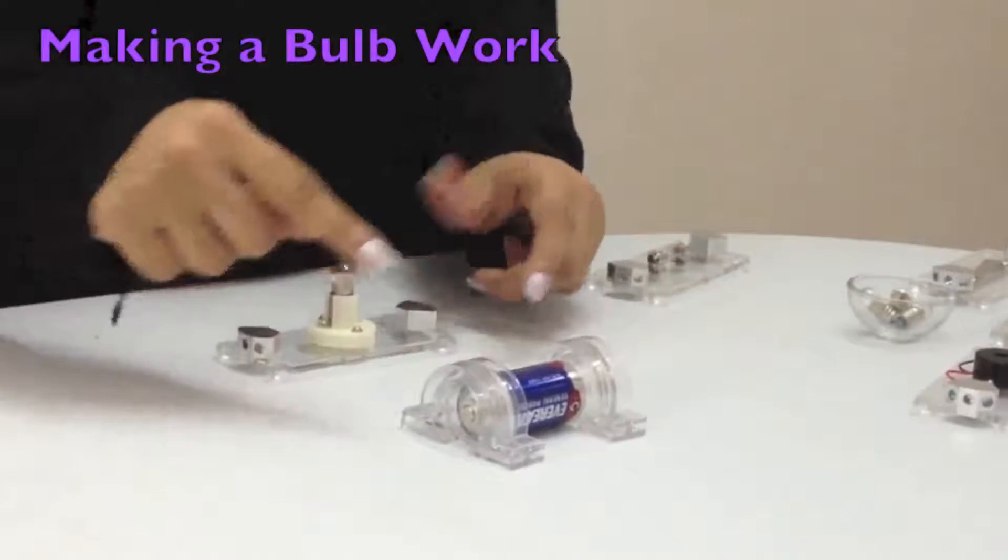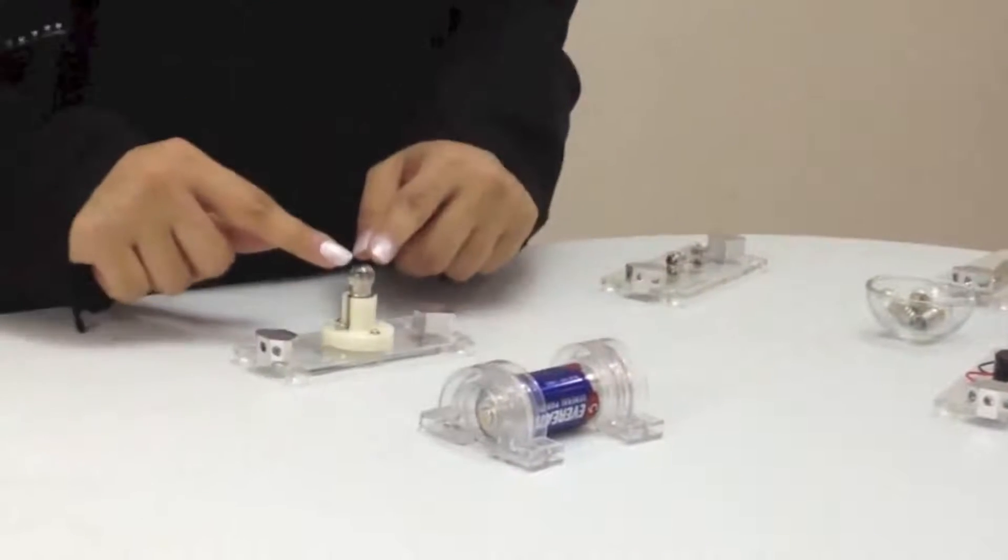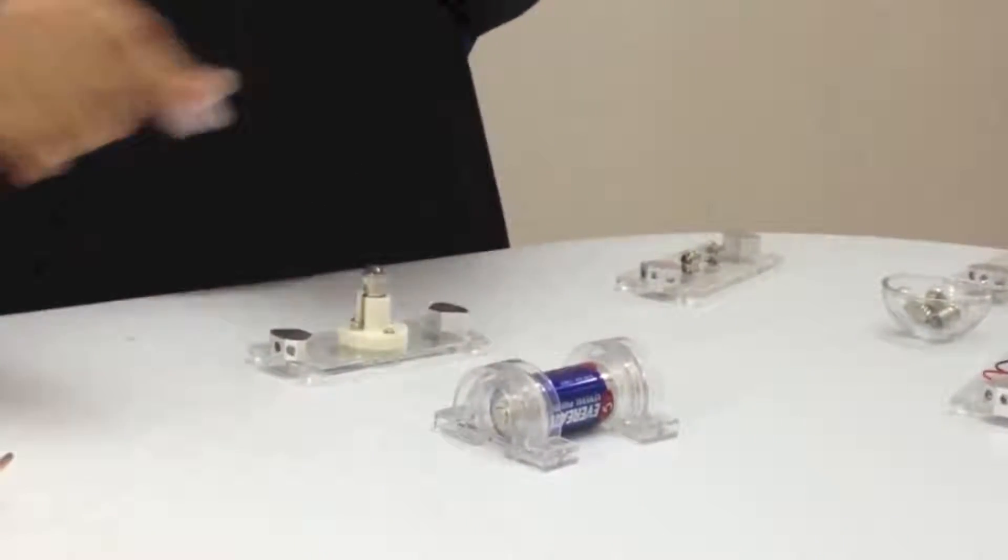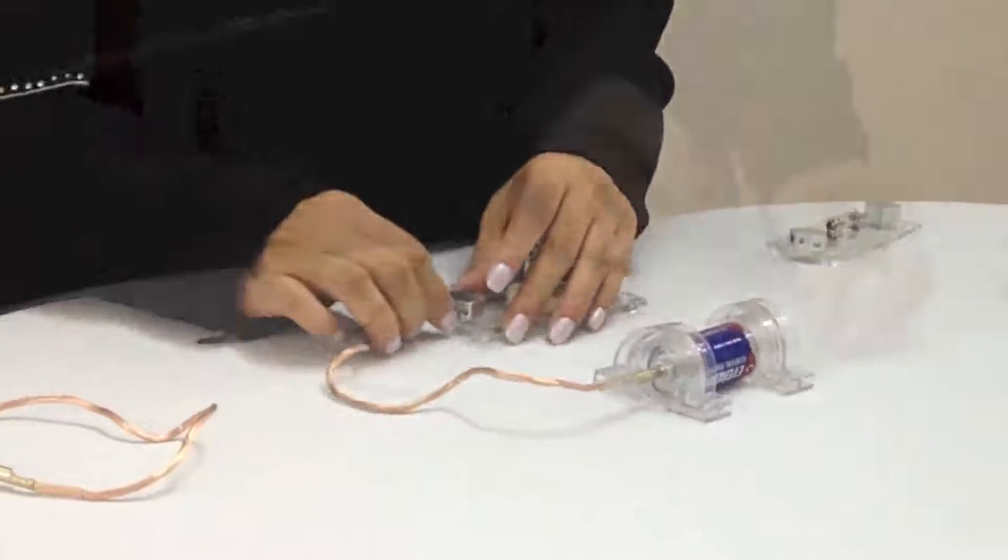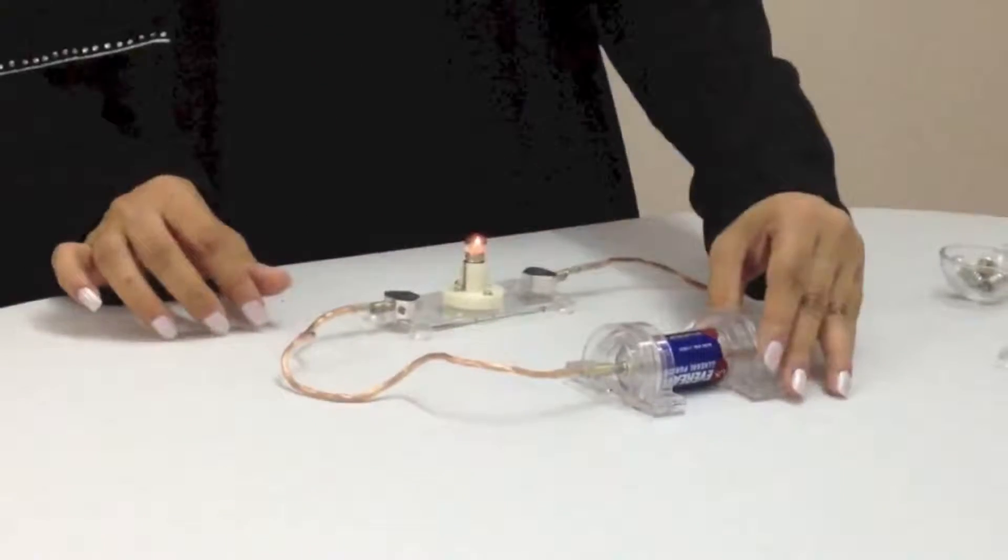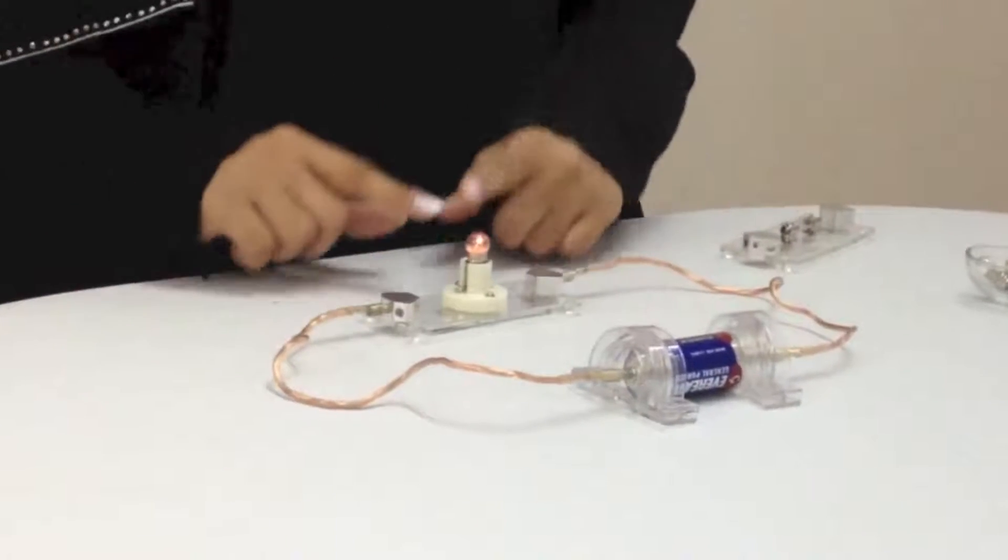We take a bulb, and we need two wires to reach the bulb. Because the circuit is complete, the bulb is running.